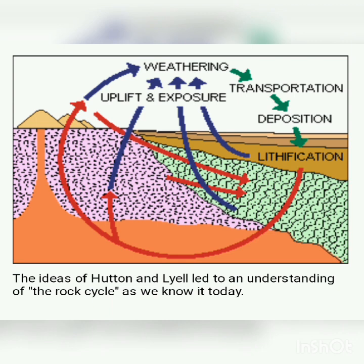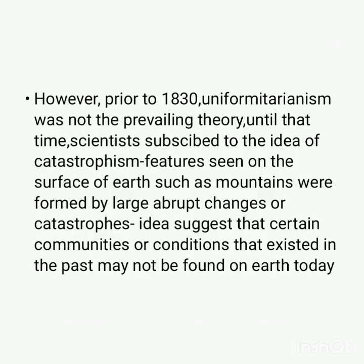This is all about the basic concepts of uniformitarianism. However, prior to this gradualistic concept, there was a prevailing theory — the idea was catastrophism, in which features seen on the surface of the Earth, such as mountains, were formed by large, abrupt changes or catastrophes. The idea suggests that certain communities or conditions that existed in the past may not be found on the Earth today.